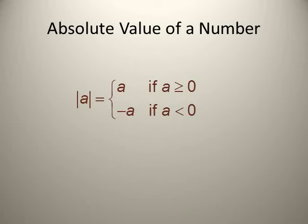But what about the case of a negative number? If inside the absolute value we have a negative number, like |−3|, now A equals negative three. The output will be three. That means negative A. So in the case of A less than zero, the output would be negative A.